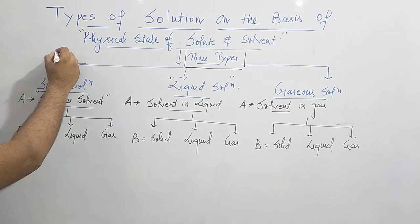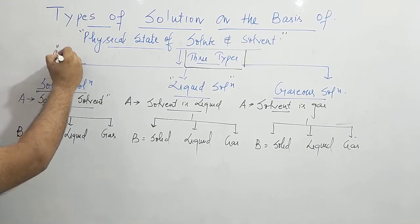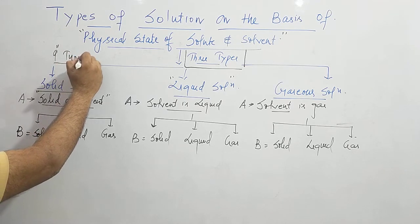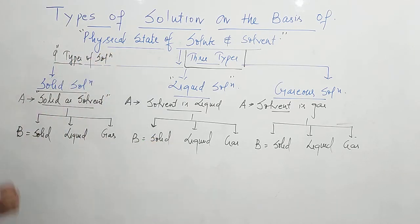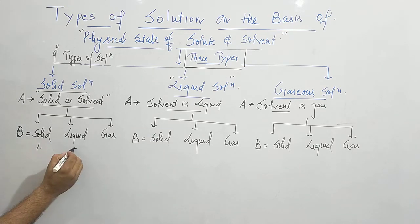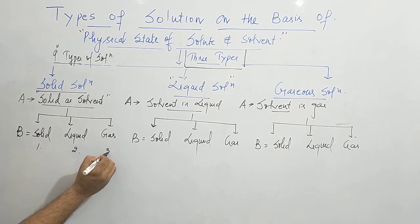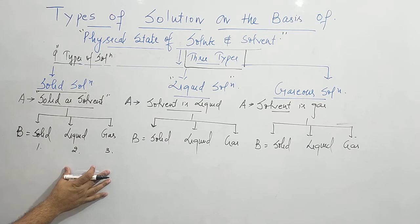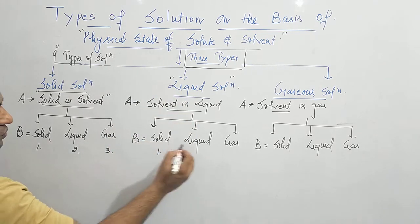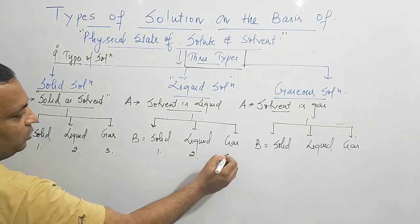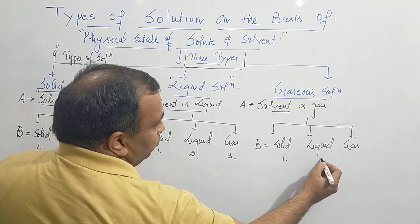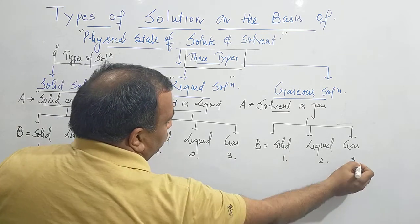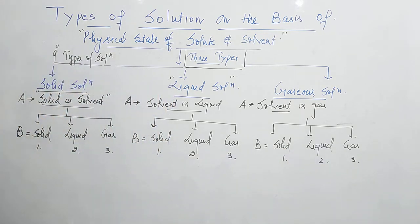So total I will get nine types of solutions. Now before we go into detail, let's see their naming. Solid solution has three types, liquid solution has three types, and gaseous solution has again three types — one, two, three.